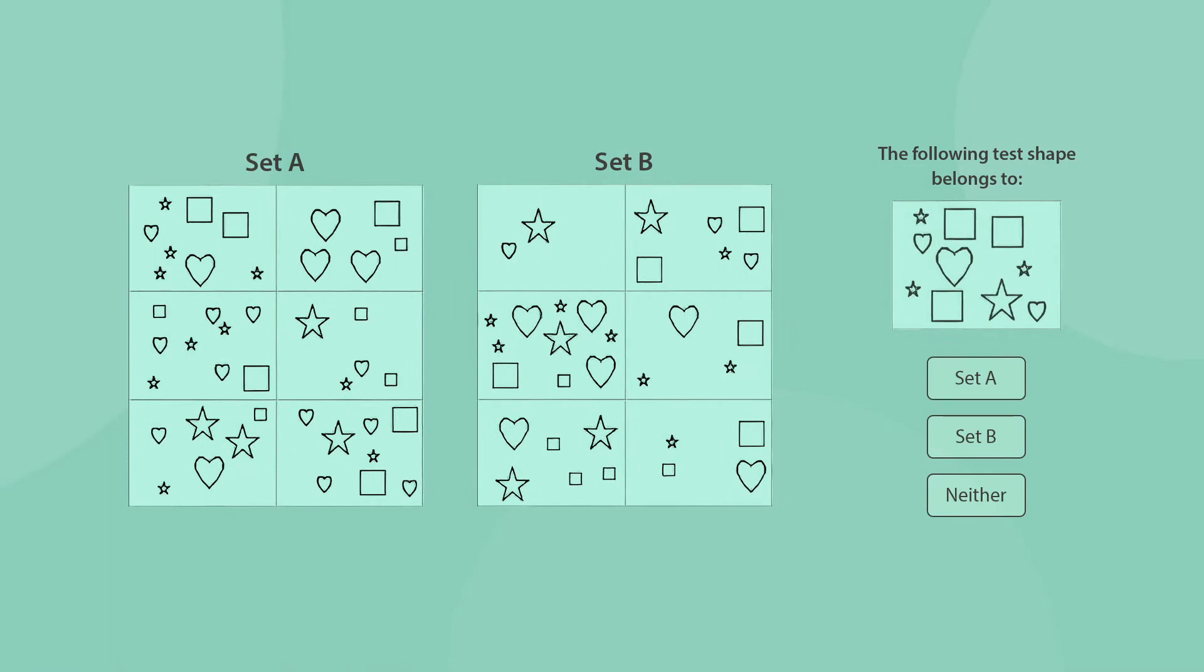Try to determine whether the following test shape belongs to set A, B, or neither. Once again, pause the video and try to answer yourself. To identify a set's logic, begin by focusing on just two or three sections of the set. Find which rules and logic govern these sections, and then check the others to see if they follow the same rules and logic.